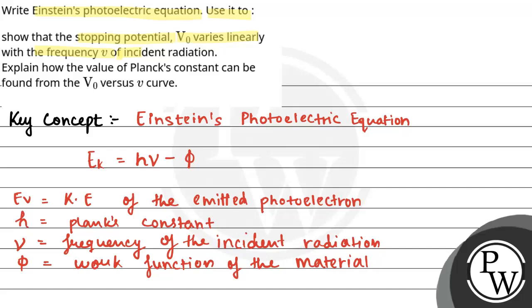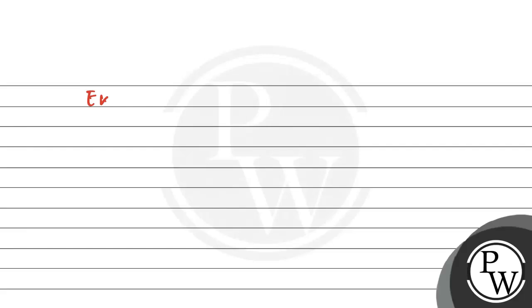The maximum kinetic energy of the photoelectron is related to the stopping potential, so we can write: Ek = eV₀, and therefore eV₀ = hν - φ. Now, if we rearrange for V₀, then V₀ = (h/e)ν - φ/e.